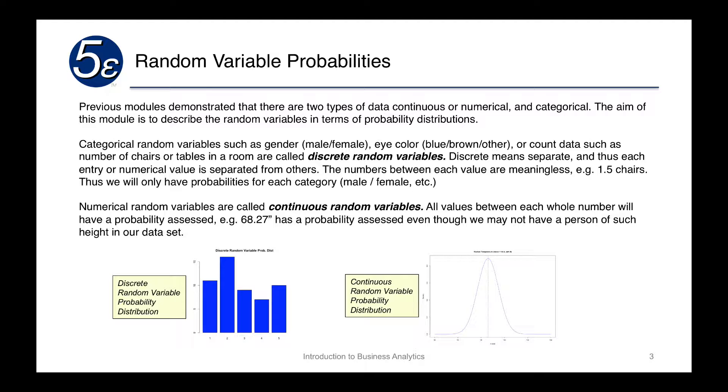On the bottom left, you'll see a graph for a discrete random variable. You can see how we have these individual bars corresponding to each level: one, two, three, four, five. And this is what a discrete random variable probability distribution looks like.